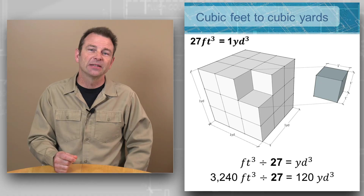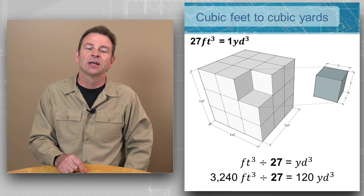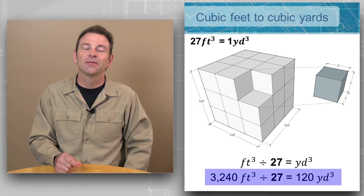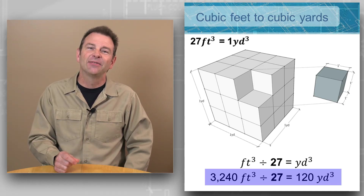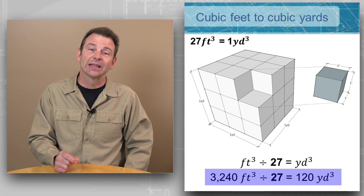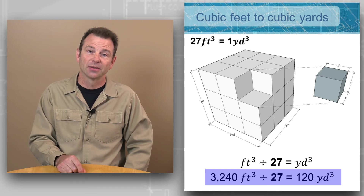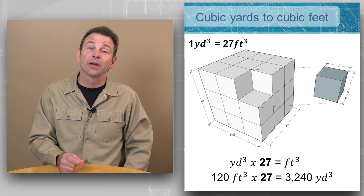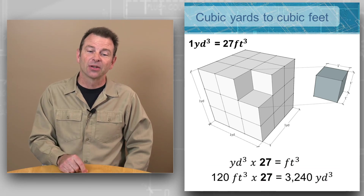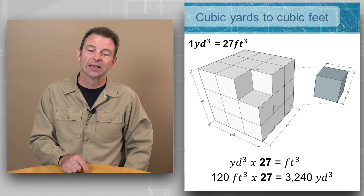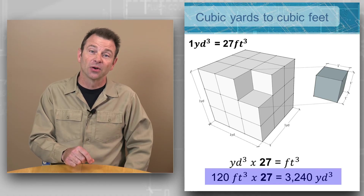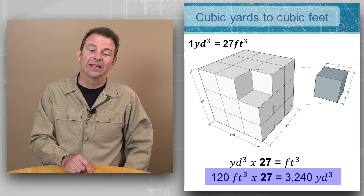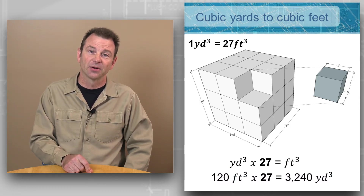Here's an example of cubic feet to cubic yards. We can take 3,240 cubic feet divided by that factor of 27 — that will give us an answer of 120 cubic yards. To convert back, we can multiply 120 times that factor of 27, which will give us 3,240 cubic feet.